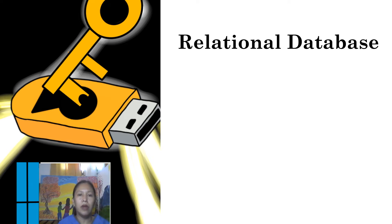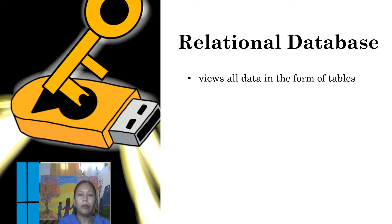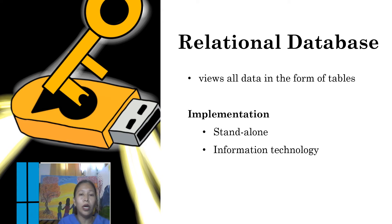How about the relational database? A relational database stores and organizes data points that are related to one another. Based on the relational database model, a relational database presents data sets as collections of tables and provides relationship operators to manipulate the data in tabular form. Meaning, it views all the data in the form of tables, whether the implementation is stand-alone or uses information technology or the internet.